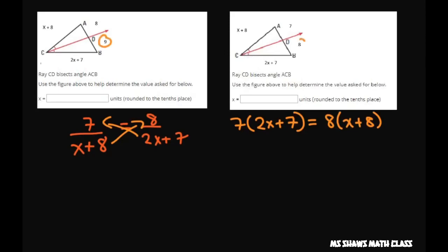And that's going to give you 14x plus 49 equals 8x plus 64. What we're going to do is subtract 8x from both sides.